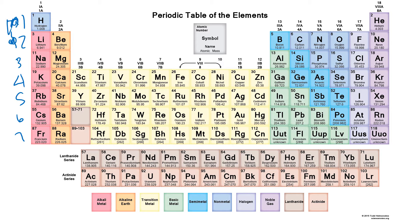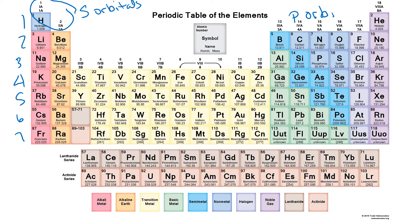Which energy level it is in tells us quite a bit. And then the other thing it can tell us is what orbitals are filled — s orbitals, p orbitals, d orbitals, or f orbitals.